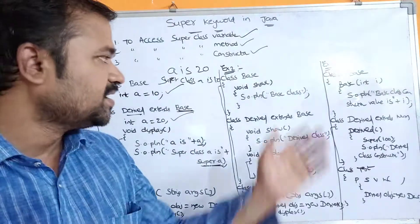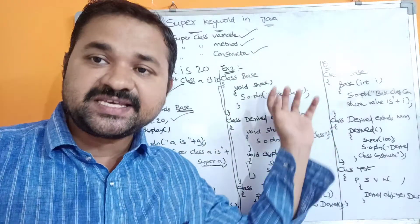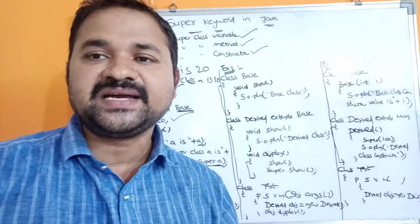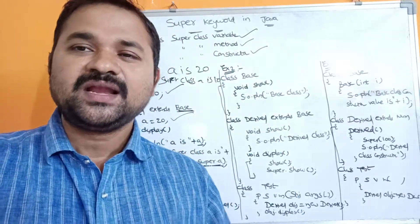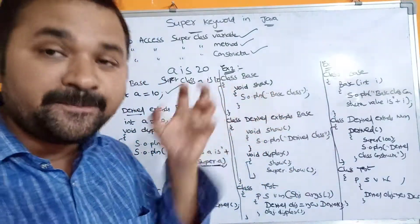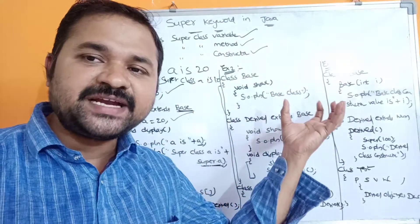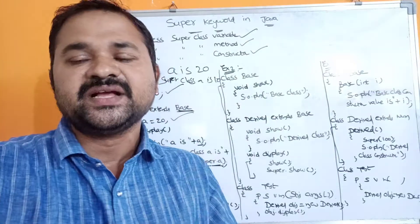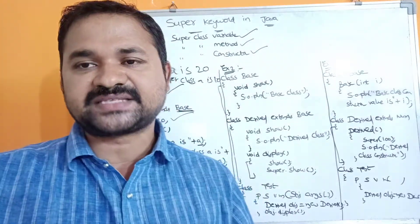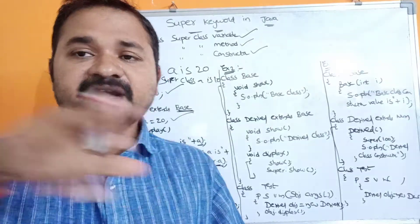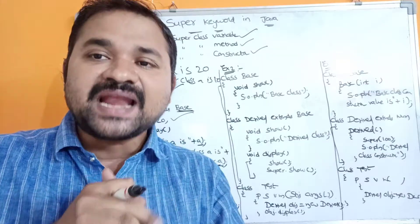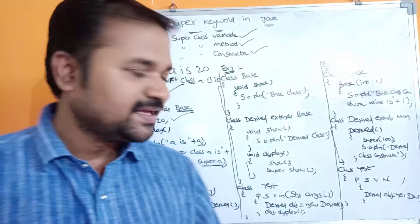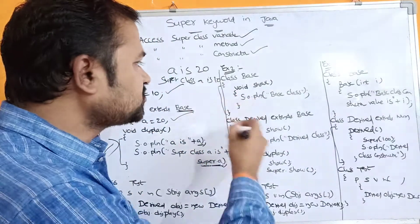Now let's see the second example. This example demonstrates how we can access a super class method from the subclass. Let us assume we have a method present in both the base class and derived class - the same method is in both. In that case, in order to access the super class method from the subclass, we use the super keyword.